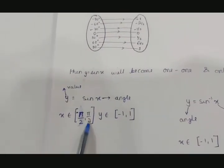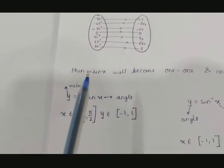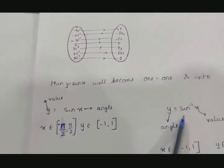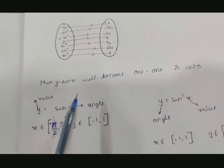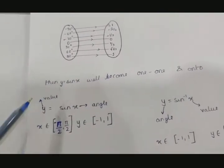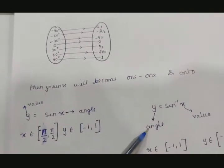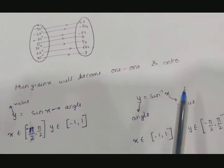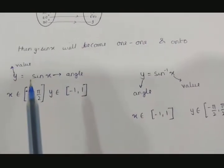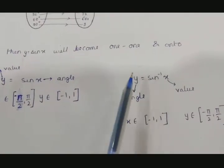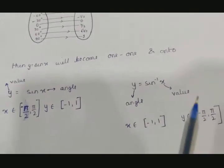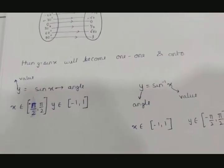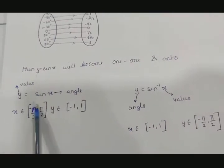Now this function's inverse exists. So for y = sin x, its inverse is y = sin⁻¹x. In y = sin x, x was the angle; in y = sin⁻¹x, x is the value and y is the angle — x and y are interchanged, and domain and range are also interchanged. So for sin⁻¹x, x takes values from [−1, 1] and y (angle) is from [−π/2, π/2].